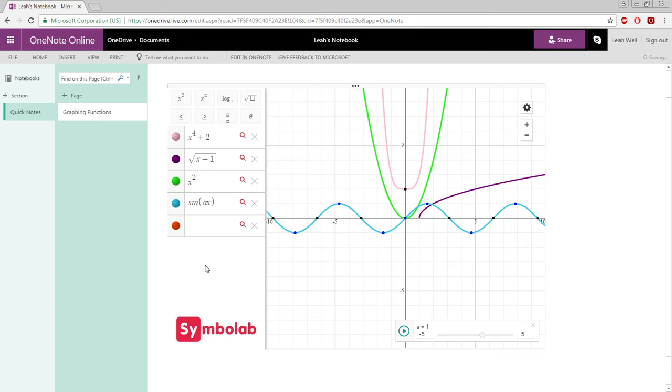In order to change the graph settings, click the Settings icon on the top right-hand corner of the screen.